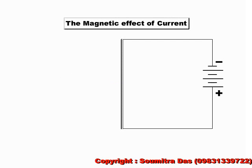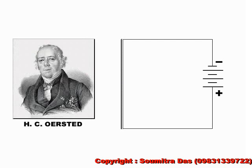A current carrying conductor is associated with a magnetic field around it. This is called the magnetic effect of current and was discovered by H.C. Oersted in 1820.